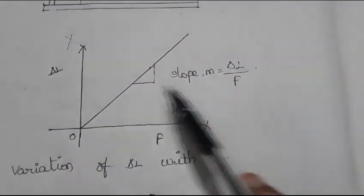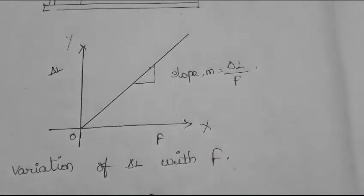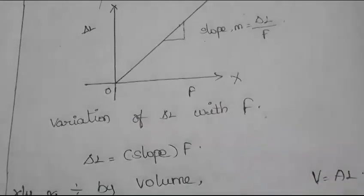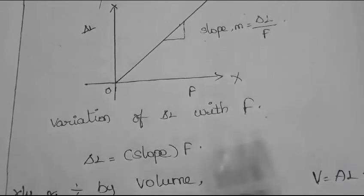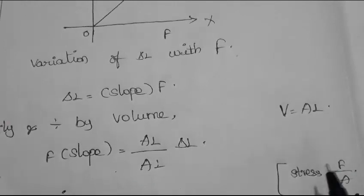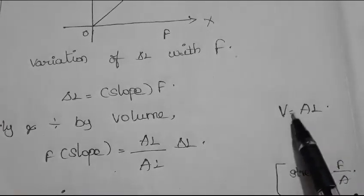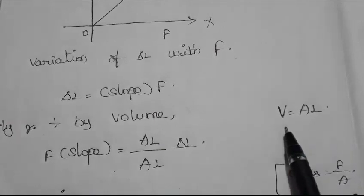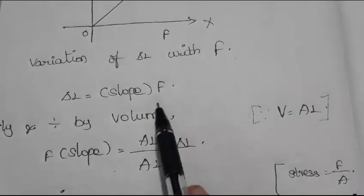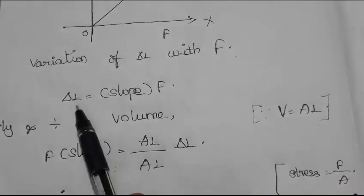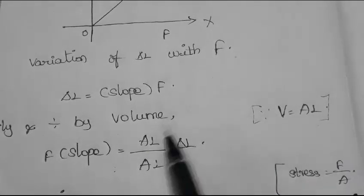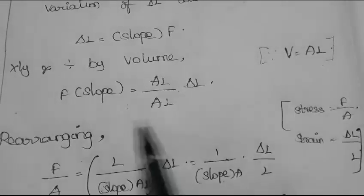From the graph, del L is equal to slope multiplied by F. We then multiply and divide by volume. The volume is A times L, so we introduce AL divided by AL into the expression and rearrange.